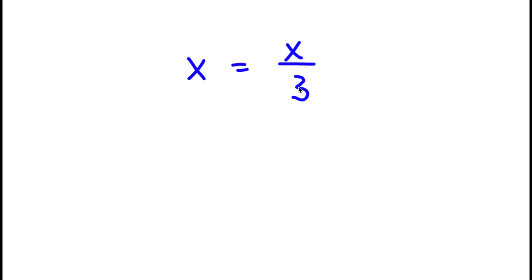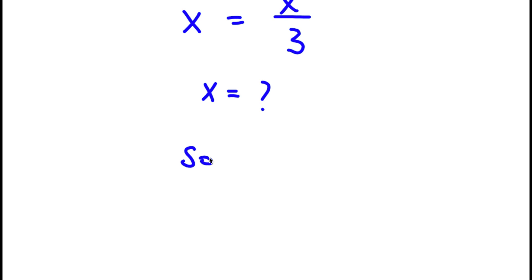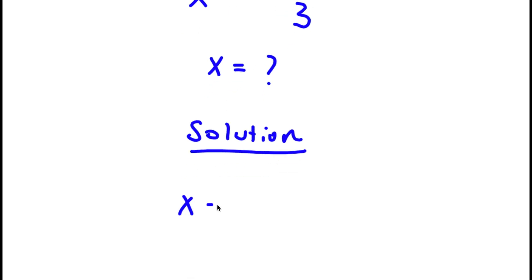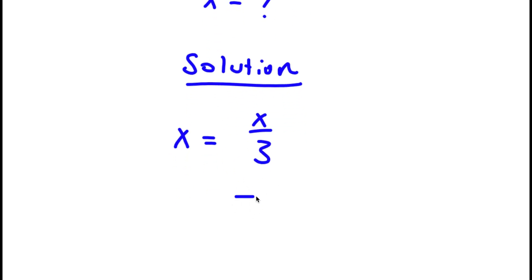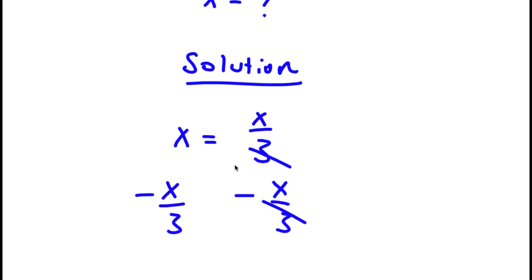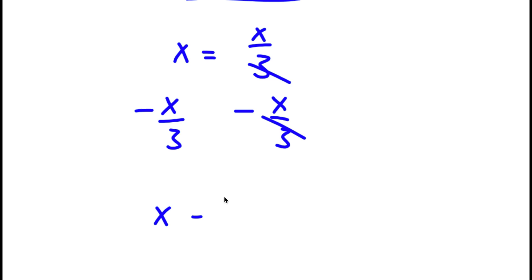In this problem, I have x is equal to x divided by 3. I want to find the value of x. For my solution, I first start with x is equal to x over 3. I'm going to subtract x over 3 on both sides. So now I'll be left with x minus x over 3 is equal to 0.